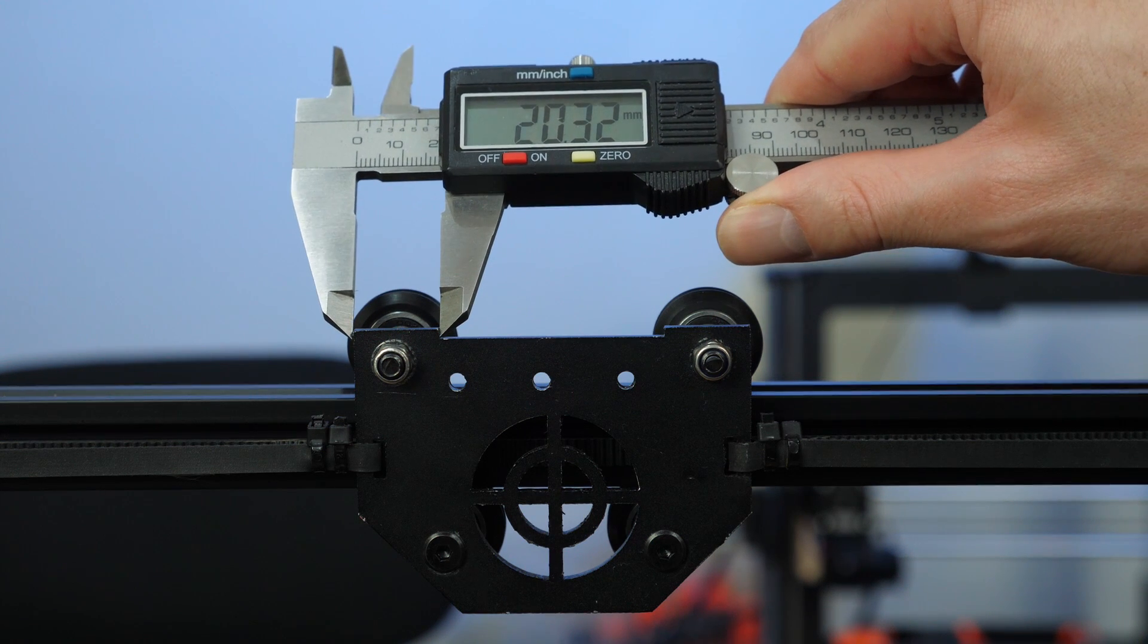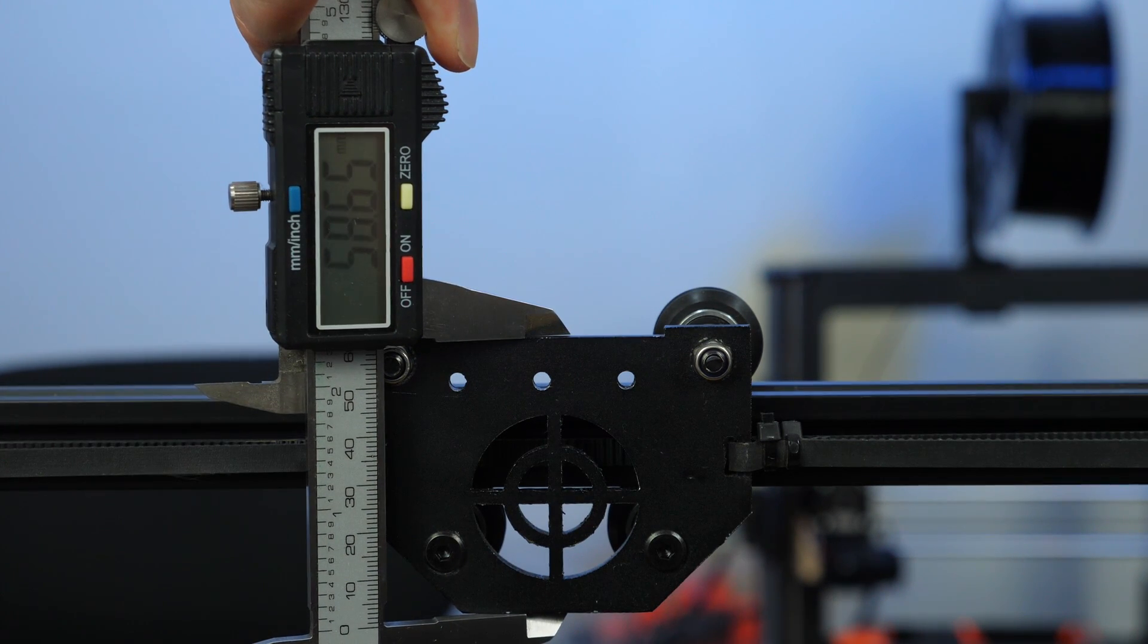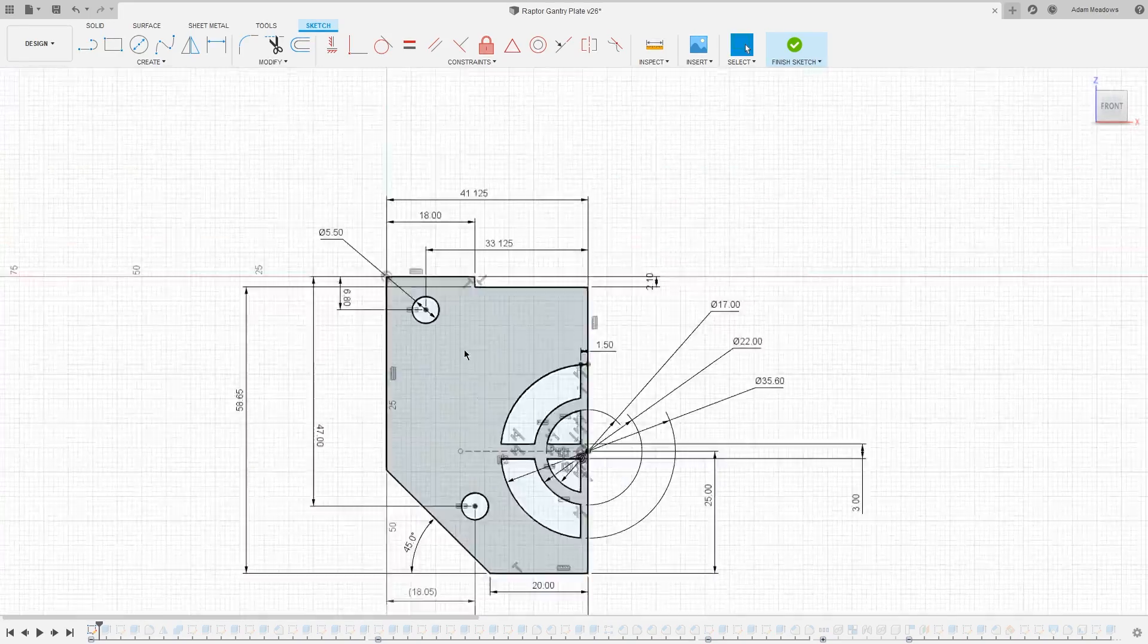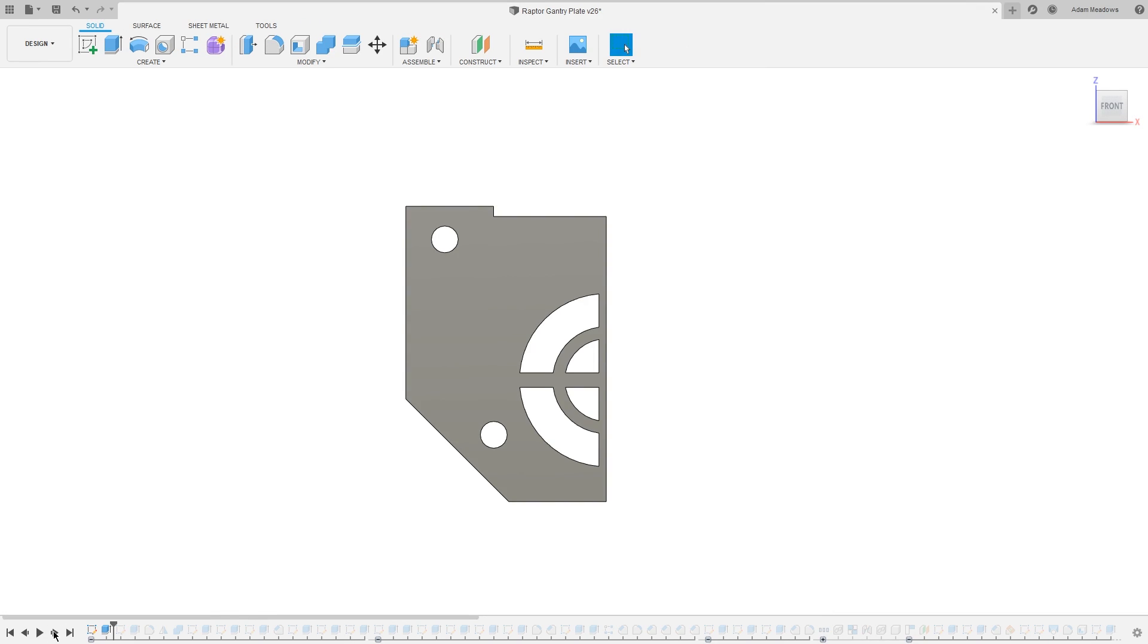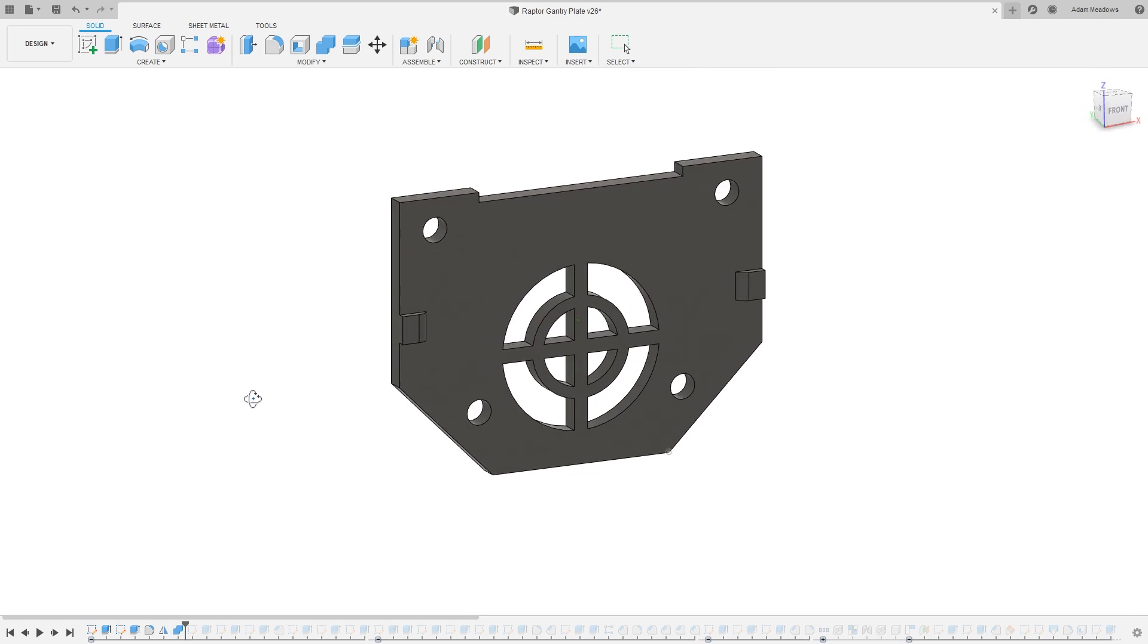So this example I'm going to show you now is from my work on the FormBot Raptor 2. It's a closed source printer, so I'm going to be measuring this mounting plate using a pair of calipers. I've done some checks and it's mostly symmetrical, so my CAD will reflect that.